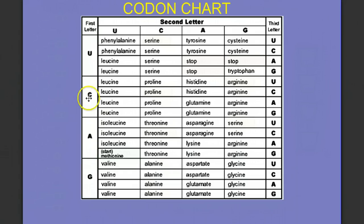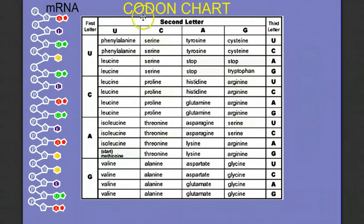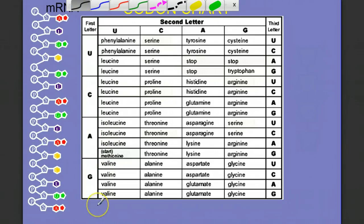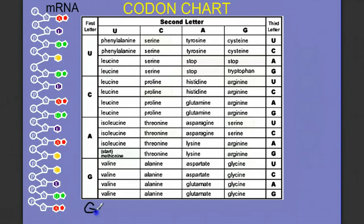Here's how a codon chart works. In every codon there are three letters. You go to the first letter — maybe it's C — then go to the second letter, maybe U, finding the corresponding column. Then find the last letter, maybe C. You'd find that CUC is leucine. You can use this chart to decode a piece of messenger RNA. For example, let's decode the codon GUG: go to the first letter G, across to the U column, then final letter G — and we find valine. So GUG can only ever code for valine.